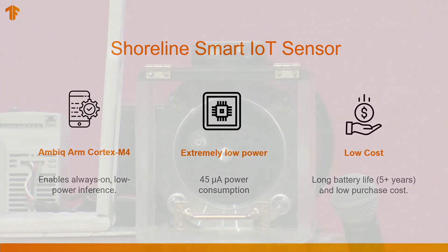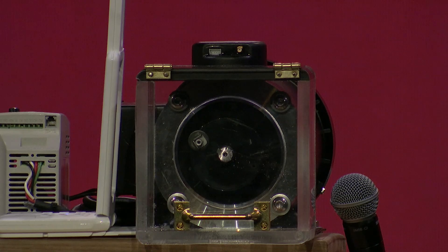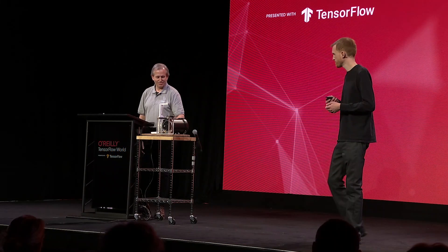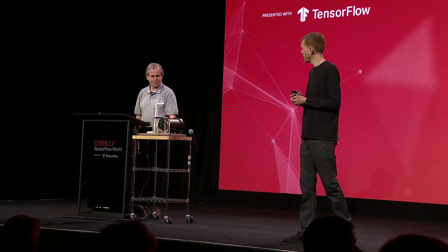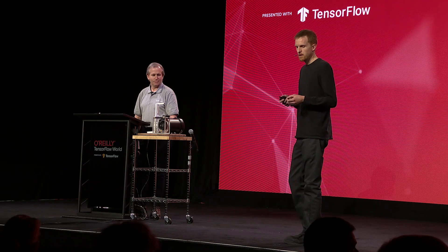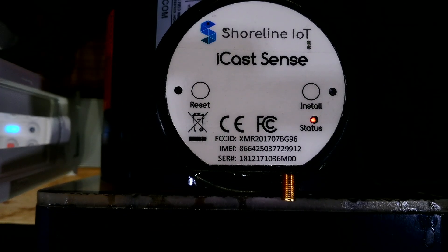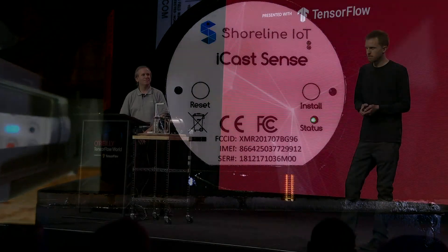Here we have a motor that will simulate an anomaly. As the RPMs increase, it will start to vibrate and shake, and the TensorFlow model should detect this as a fault and indicate so with a red LED. So here we have a normal state, being detected with a green LED — everything's fine. Let's crank it up. It's starting to vibrate and oscillate. Red light. The TensorFlow model detected the anomaly — we could shut it down. Halloween disaster averted. Thank you, Mark.